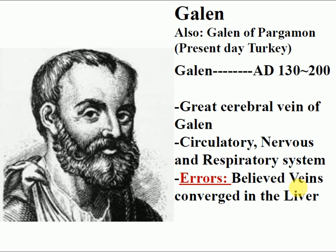Galen suggested the idea of the great cerebral vein, now called the great cerebral vein of Galen, and introduced ideas about the circulatory nerves and circulatory system. He was the first to identify the presence of those systems in the human body, as nobody knew about them at the time. However, one error in Galen's ideas is that he believed veins converge in the liver, when in fact veins converge in the heart.